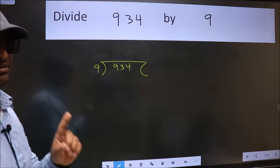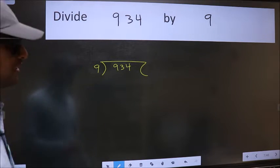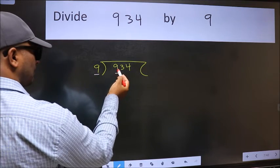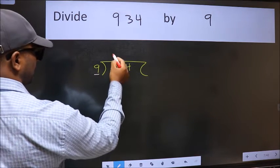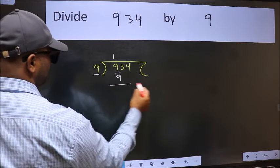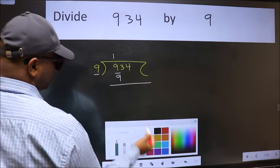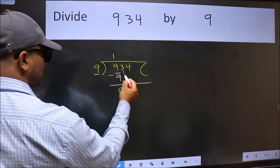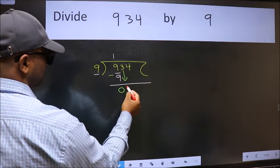This is step one. Next, here we have nine and here nine. When do we get nine in the nine table? Nine once nine. Now we should subtract, we get zero. After this, bring down the next number, so three.